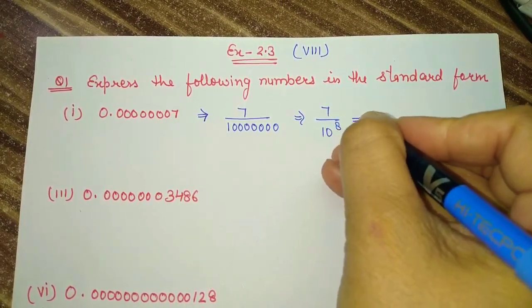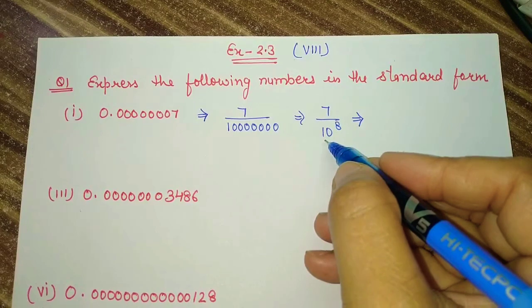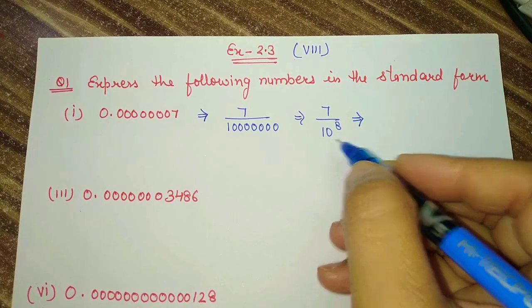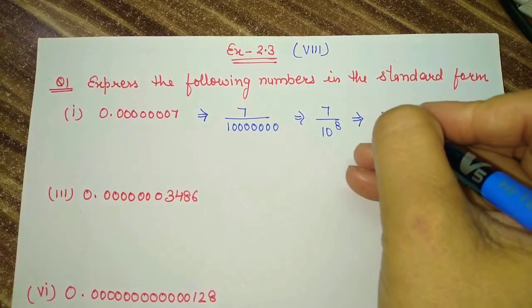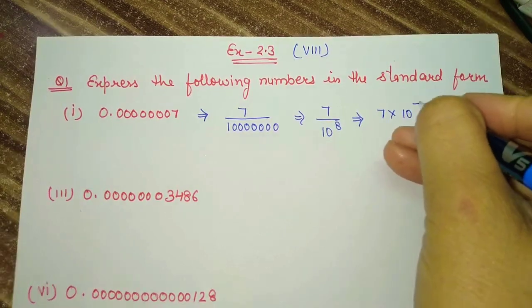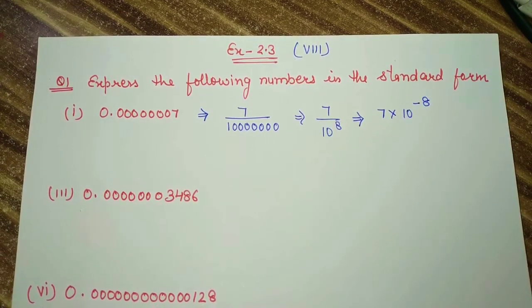And then after, we convert 10 raised to the power 8 into a negative exponent. So we can write 7 × 10 raised to the power negative 8. Now for the third part, after the decimal count the number of digits: 1, 2, 3, 4, 5, 6, 7, 8, 9, 10, 11, giving 10 to the power 11.